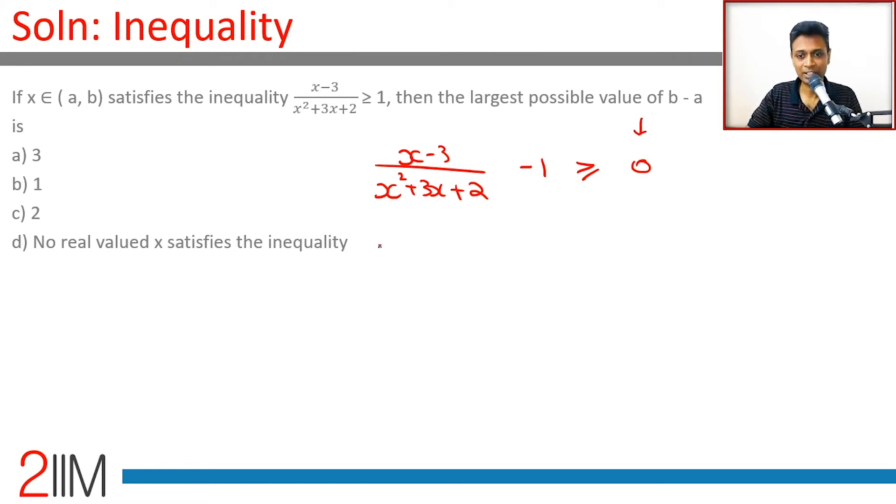Let's simplify this: (x - 3 - x² - 3x - 2)/(x + 1)(x + 2) ≥ 0. Now I'm factorizing it because I've done the LCM part.